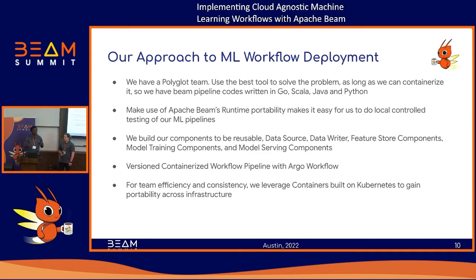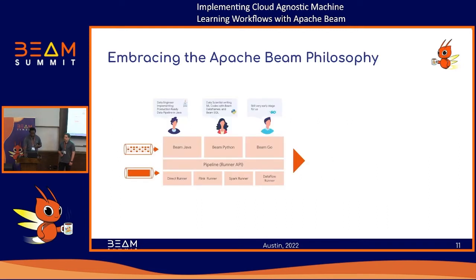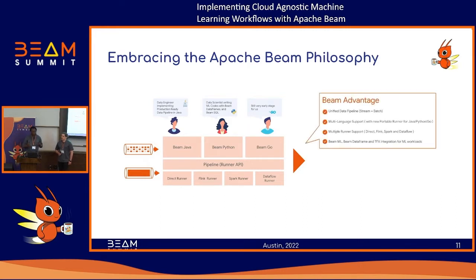Overall, we leverage this approach so we can take the knowledge we've acquired around Beam and building ML workflows and transfer it whether we're building things on Azure, AWS, or anywhere else. The Beam philosophy is that you can have different people working with different languages as long as you write it with your SDK — someone working with the Beam Java driver, someone with Beam Python or Golang. You have a pipeline runner and you can target all the different runners. This gives us support for both streaming and batch datasets, multi-language support, and the ability to quickly test things on a local runner.